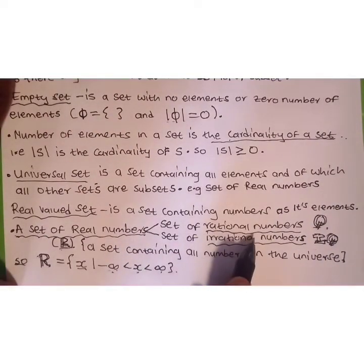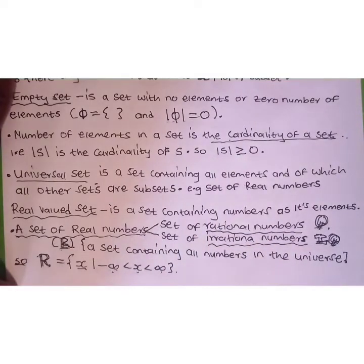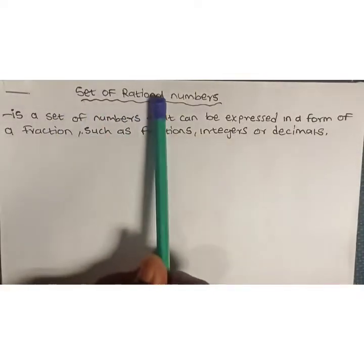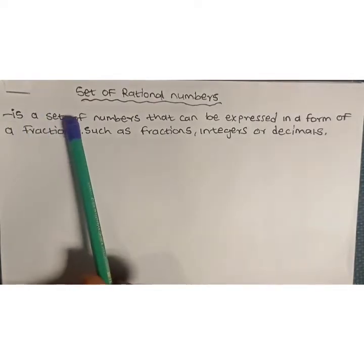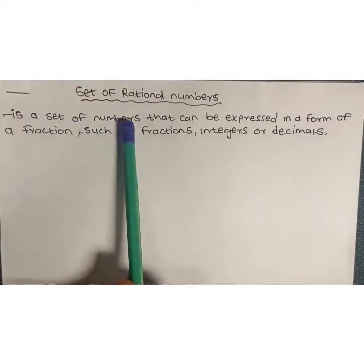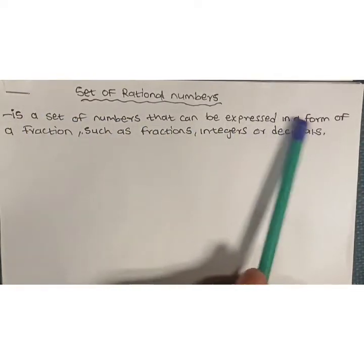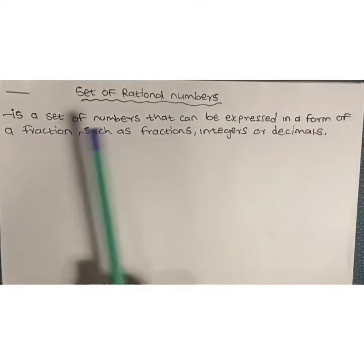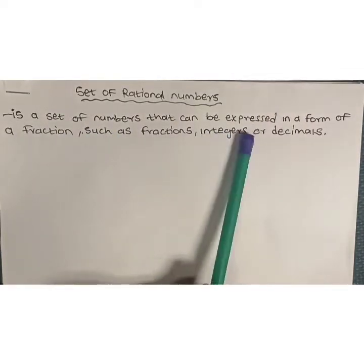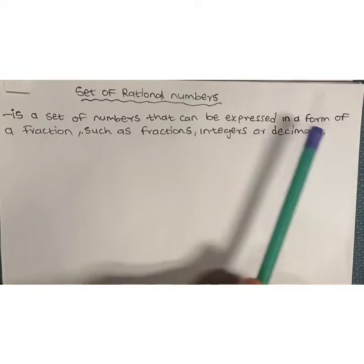Let's define the set of rational numbers and each subset. A set of rational numbers is a set of numbers that can be expressed in the form of fractions, such as integers, fractions, or decimals.